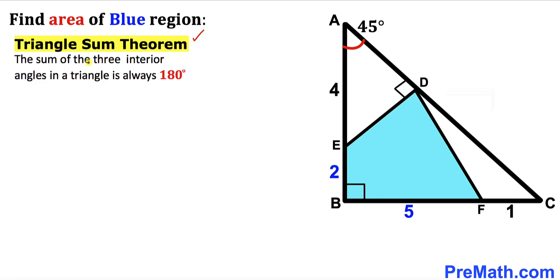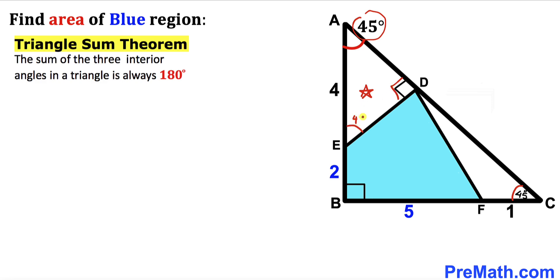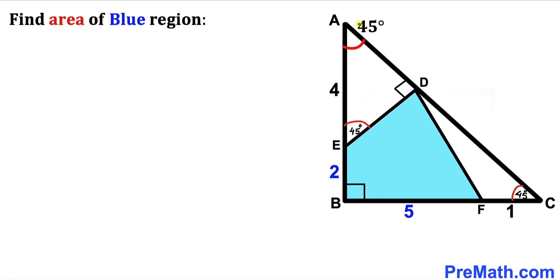Let's recall the triangle sum theorem: the sum of three interior angles in a triangle is always 180 degrees. In right triangle ABC, angle BAC is 45 degrees and one angle is 90 degrees, so the third angle must be 45 degrees. Likewise, in right triangle ADE, angle is 45 degrees and one angle is 90 degrees, so the remaining angle is also 45 degrees.